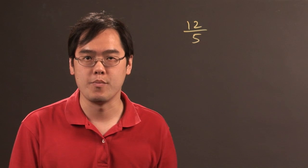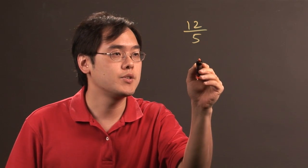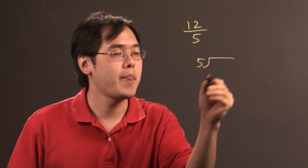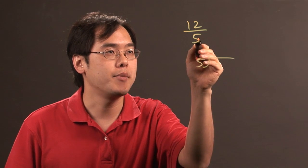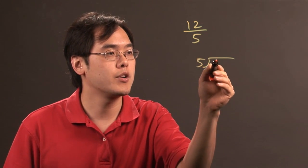Now for example, if you have the proportion 12 fifths and you want to turn that into a mixed fraction, all you do is do a little simple division exercise. The denominator goes outside, numerator goes inside.